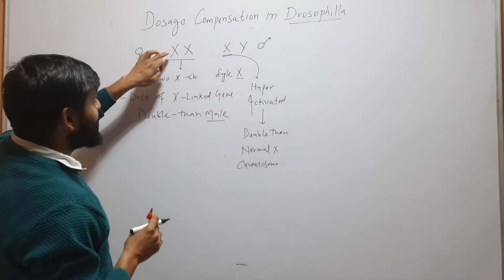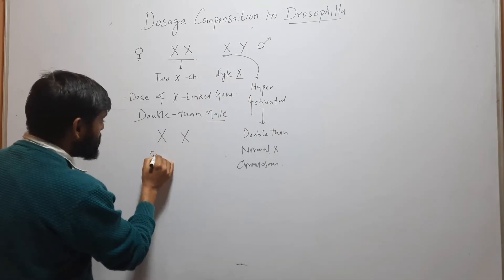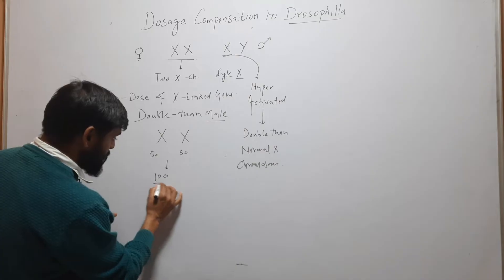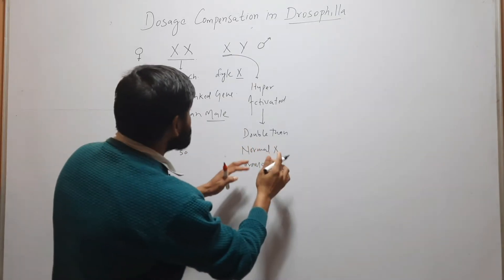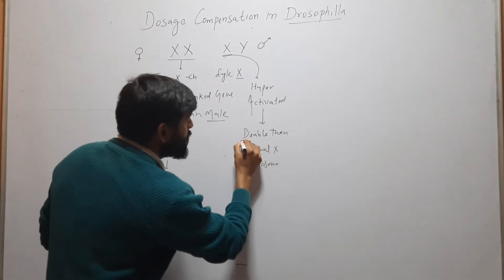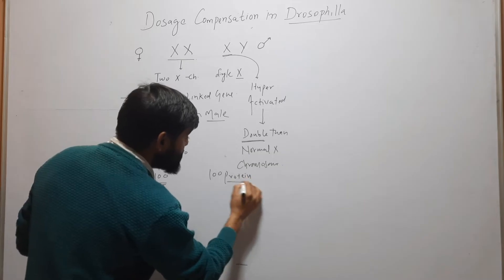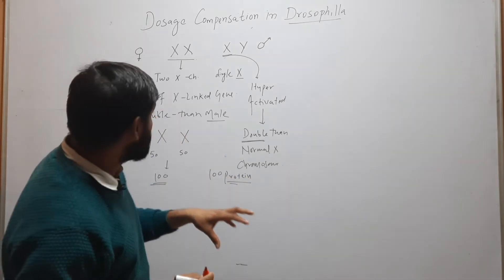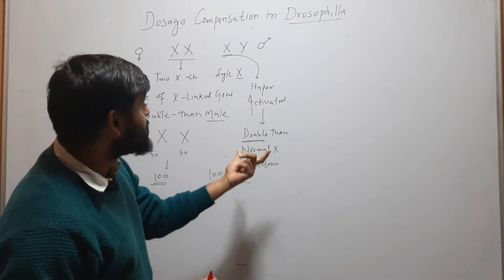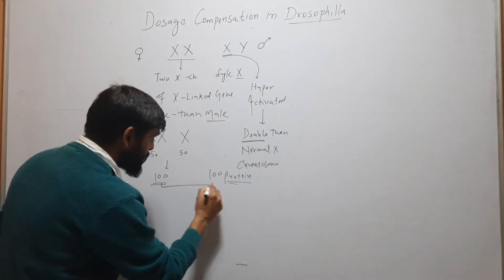Suppose in this female there are two X chromosomes — this X is making 50 proteins and this one is making 50, for a total of 100 proteins. This single X alone in the case of male Drosophila is hyperactivated so it makes 100 proteins. Both the female's two chromosomes and the male's single chromosome produce 100, so they are equal.